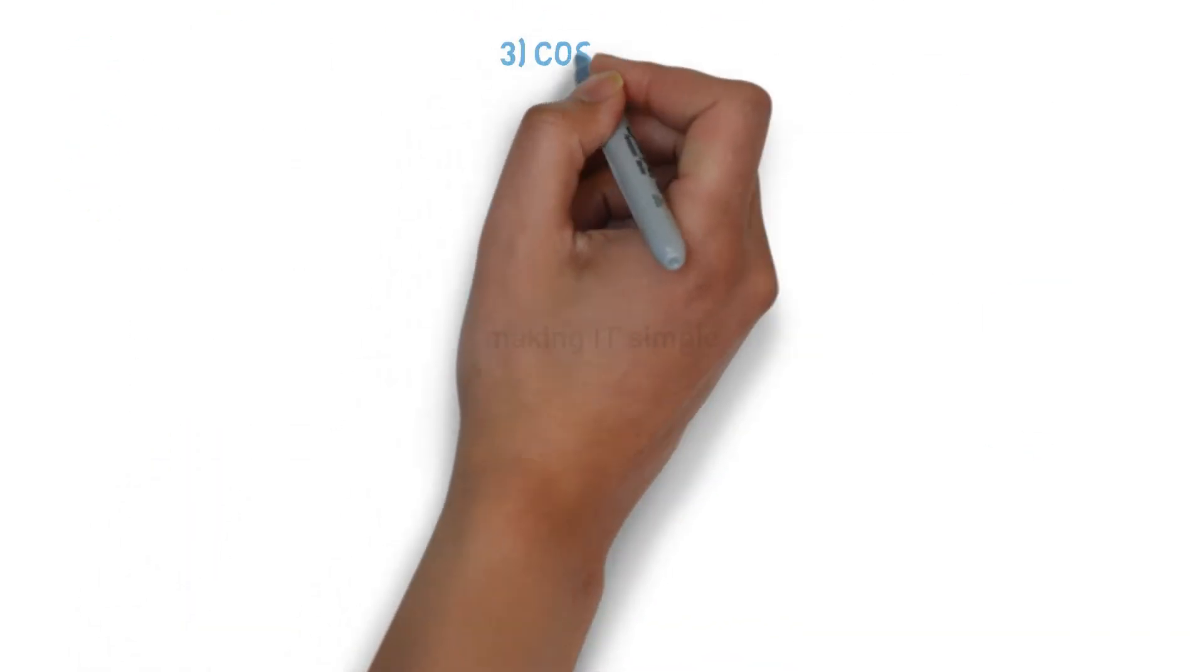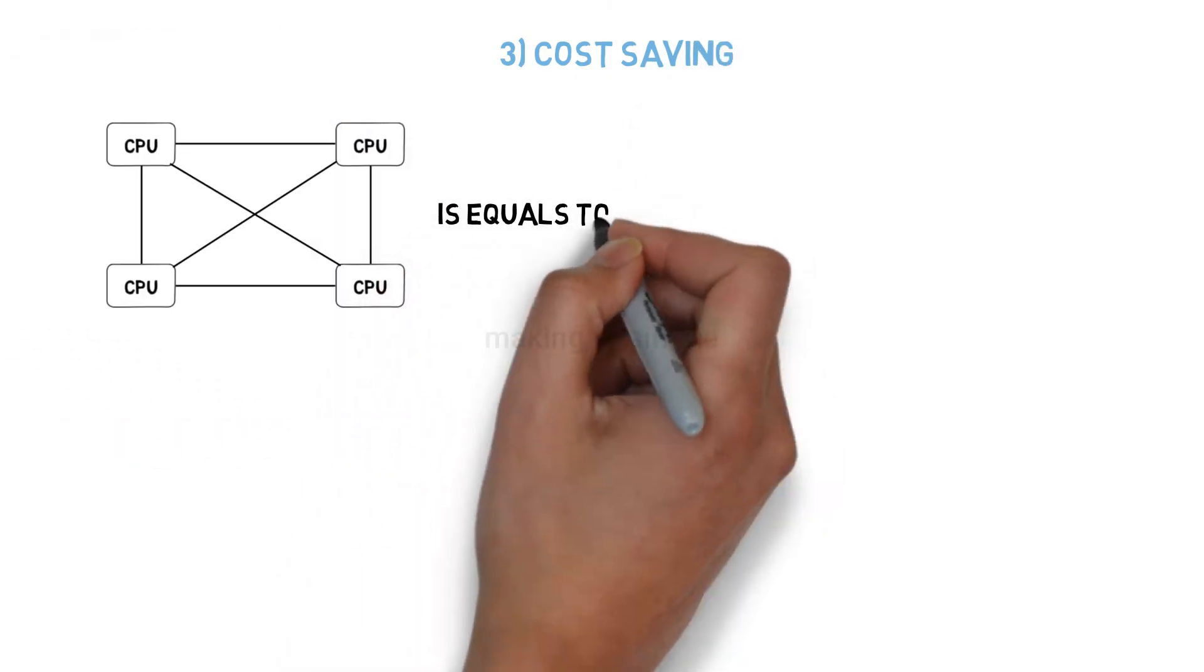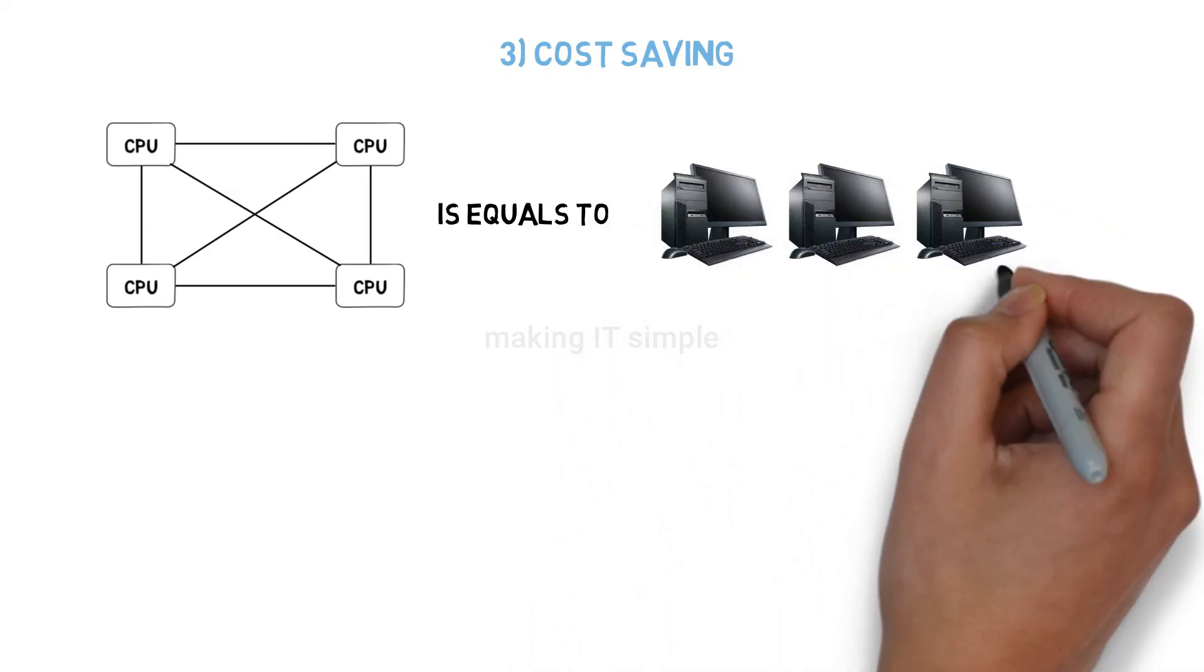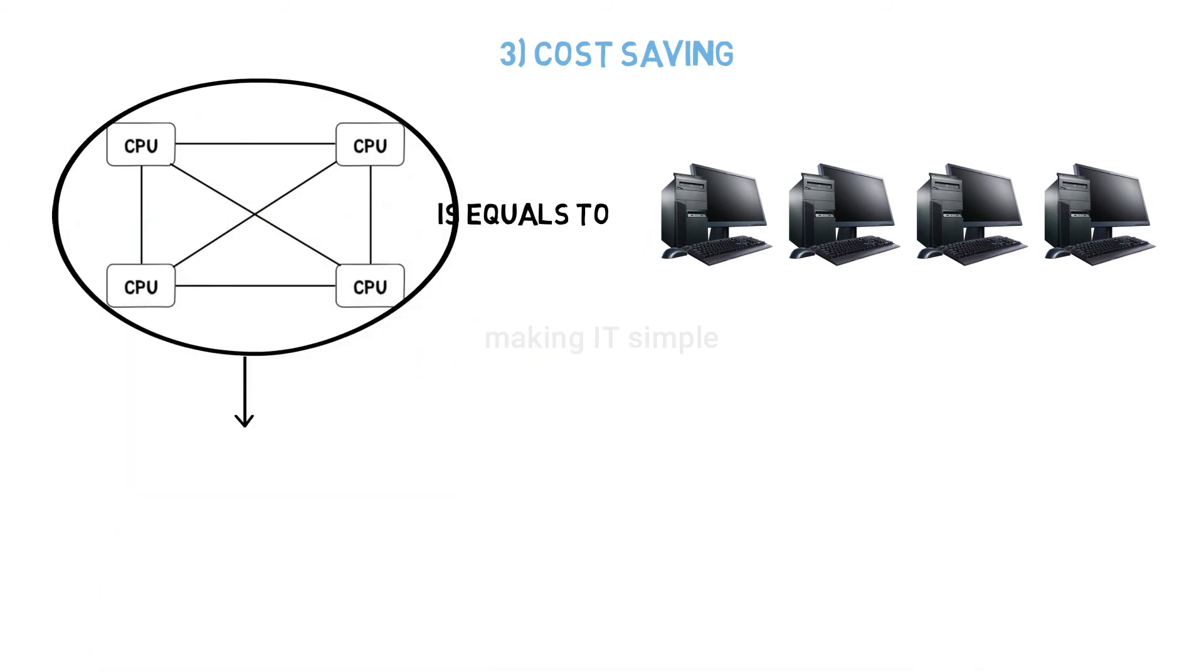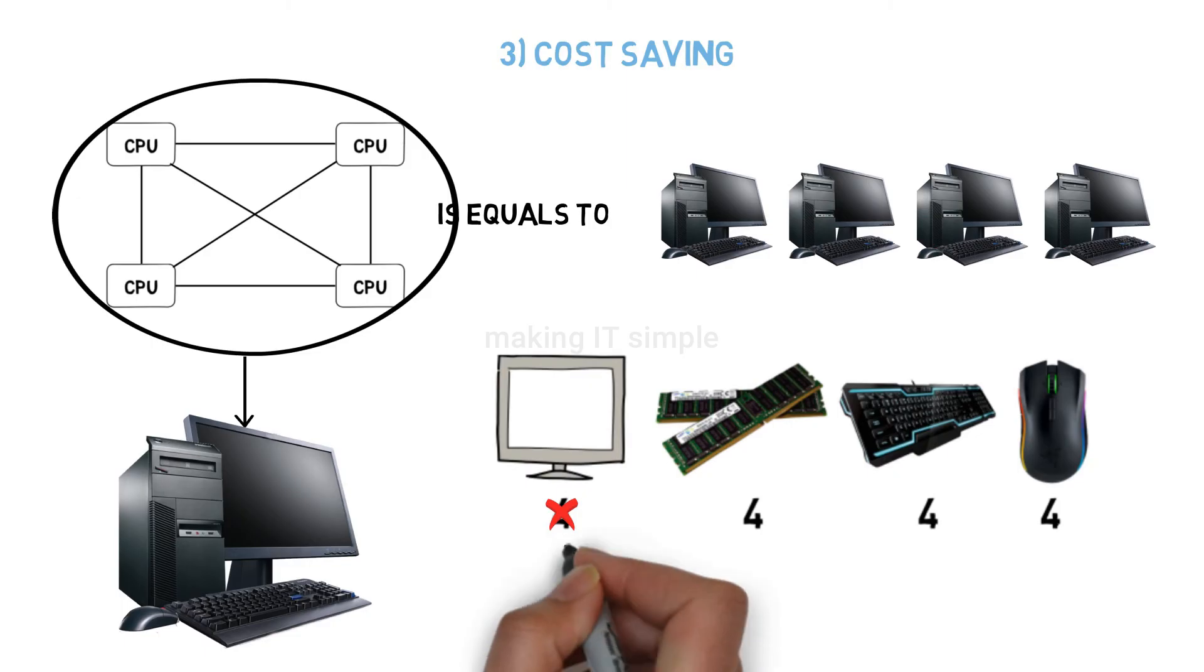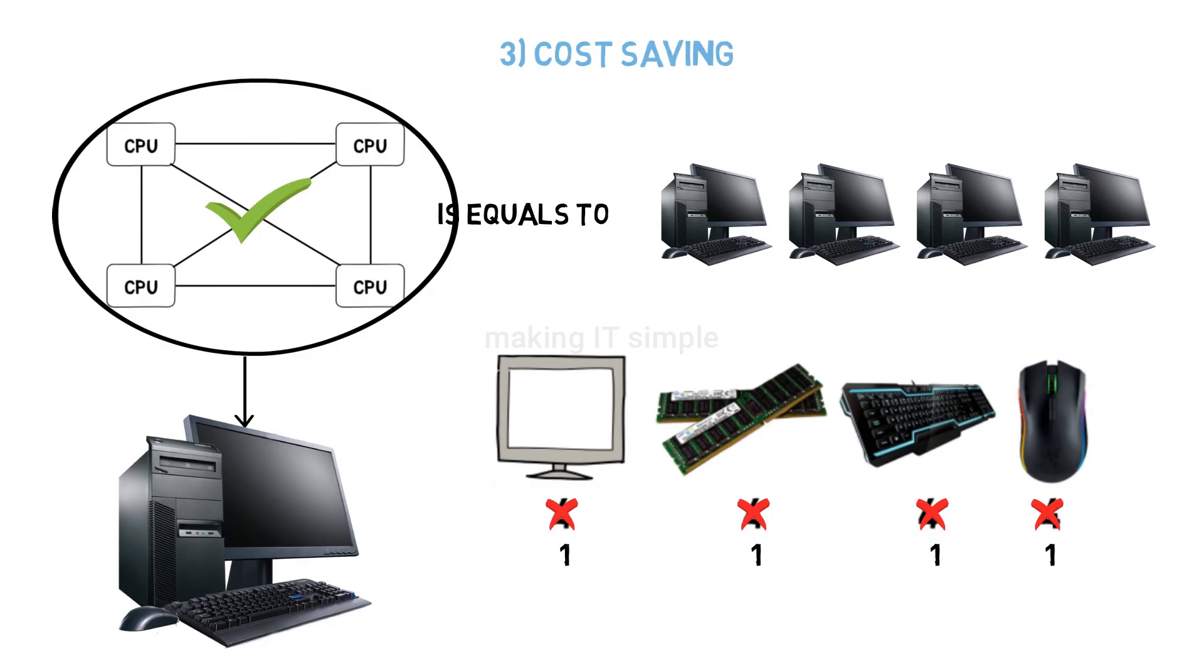Third advantage is cost saving. If we are using a quad-core processor, that means four processors, we are doing same amount of work we would do with four different single processor computers. But we get this all in one multi-processor system, and cost is saved because we don't require multiple monitors or keyboards or memory or any other hardware. We just require multiple processors within a single computer system. So multi-processing is definitely cost saving.